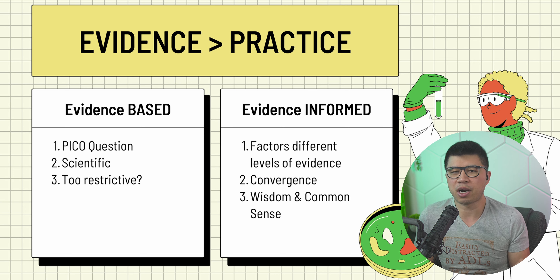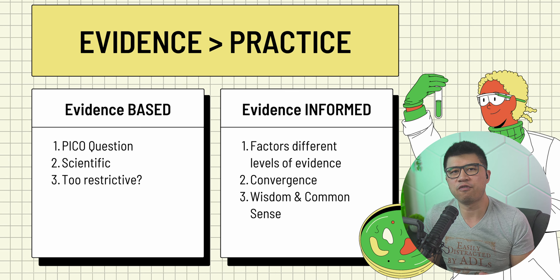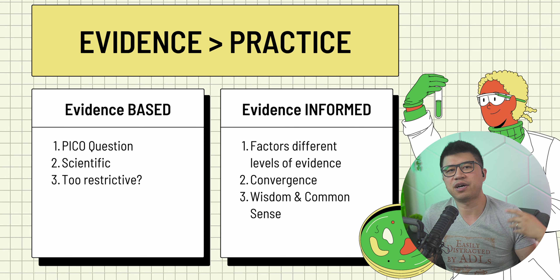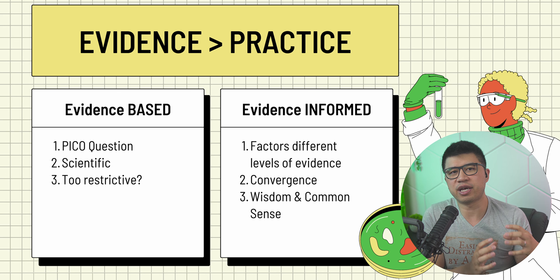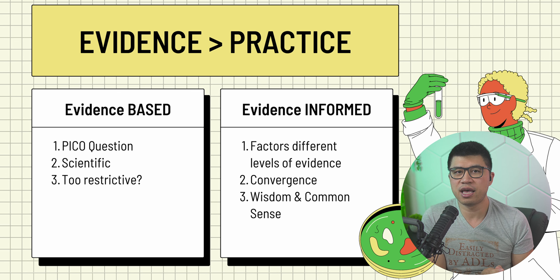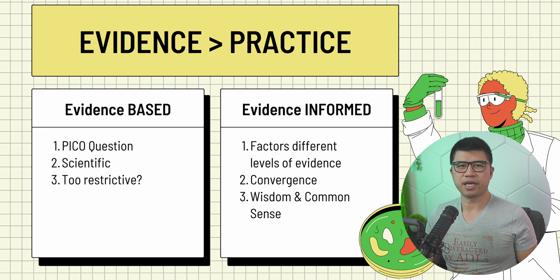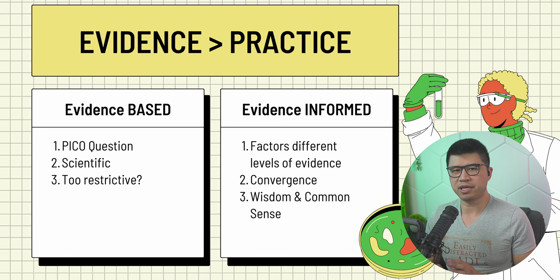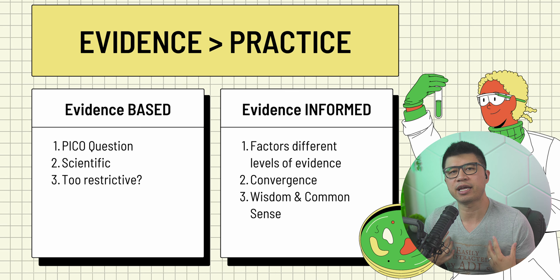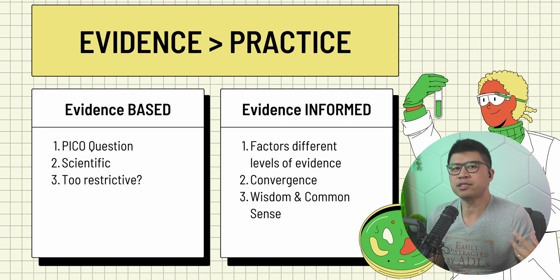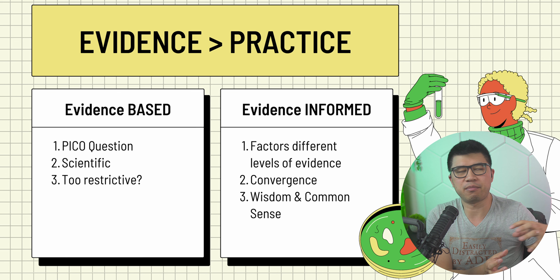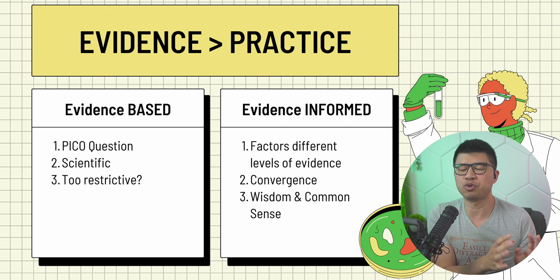There's kind of a lag across all professions between research and practice, because it takes time for practitioners to look into the research and for it to be accepted. Evidence-based practice consists of asking a question, such as a PICO question — P for population or problem, I for intervention, C for comparison, and O for outcome. This process involves searching for the evidence, evaluating and appraising it, integrating it into a clinical evaluation, and evaluating its effectiveness. Critics of EBP argue that it is too restrictive for decision-making for our clients.